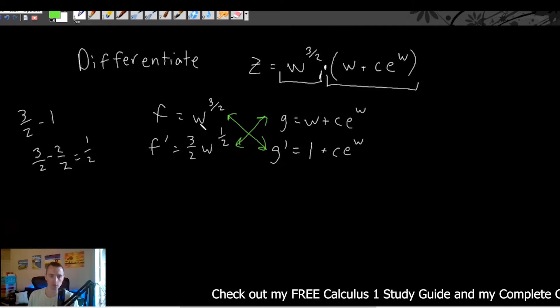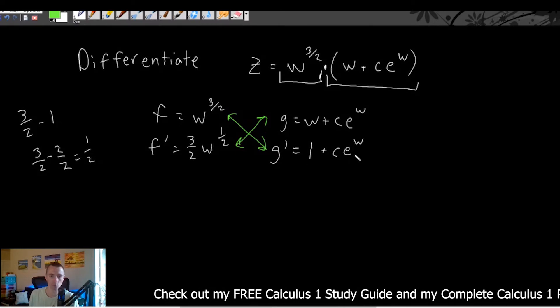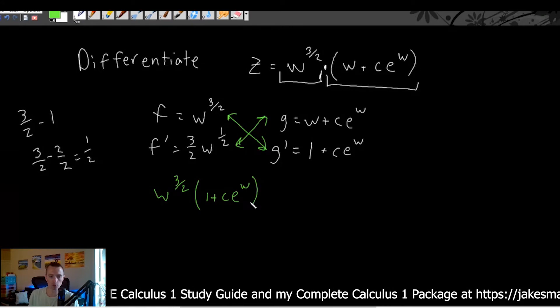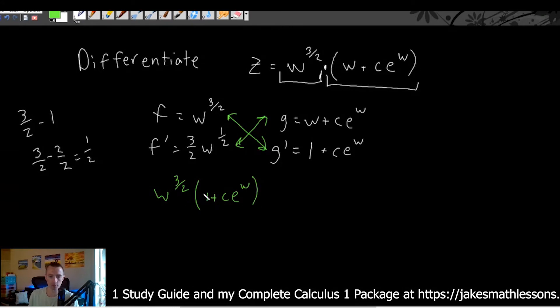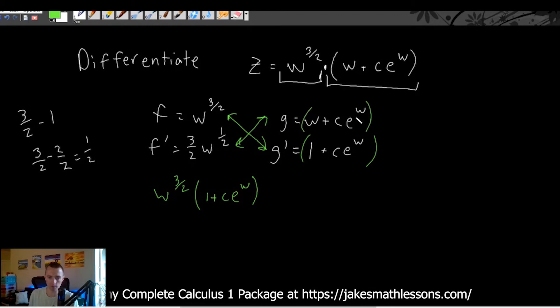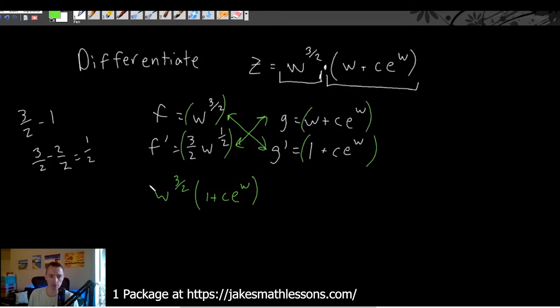So we're going to get w to the three halves times one plus ce to the w. Now, it is important when you're doing this w times all this stuff, this term here, you want to put all these in parentheses.